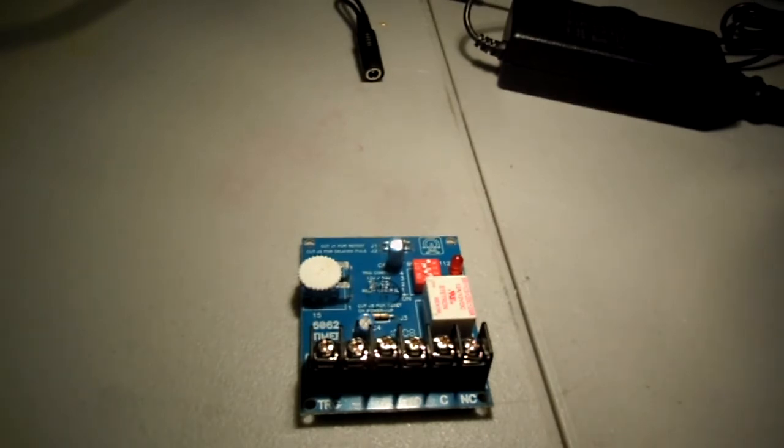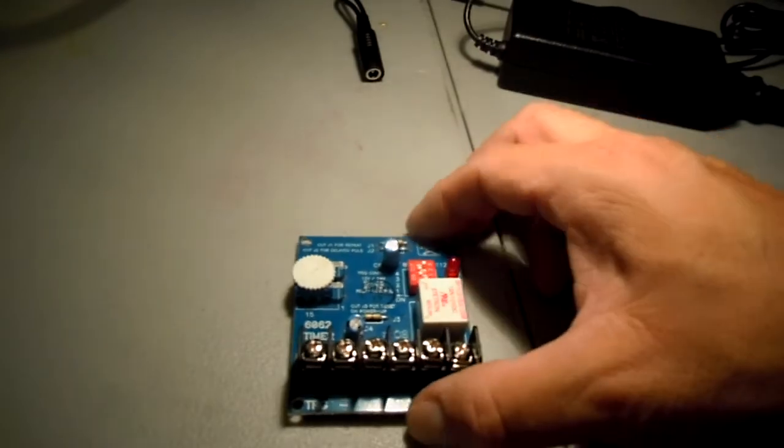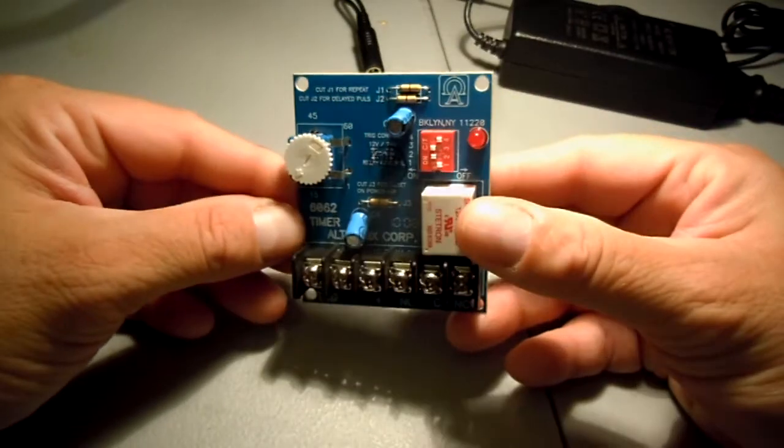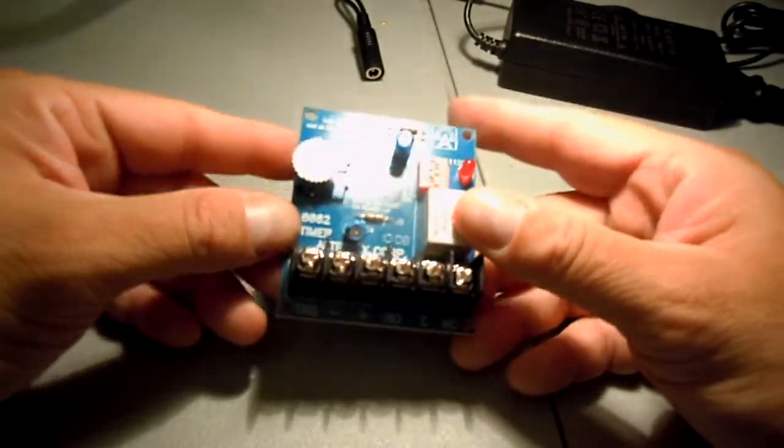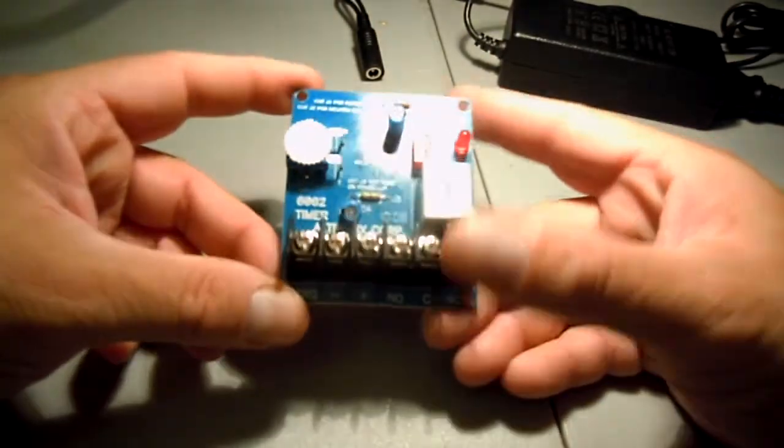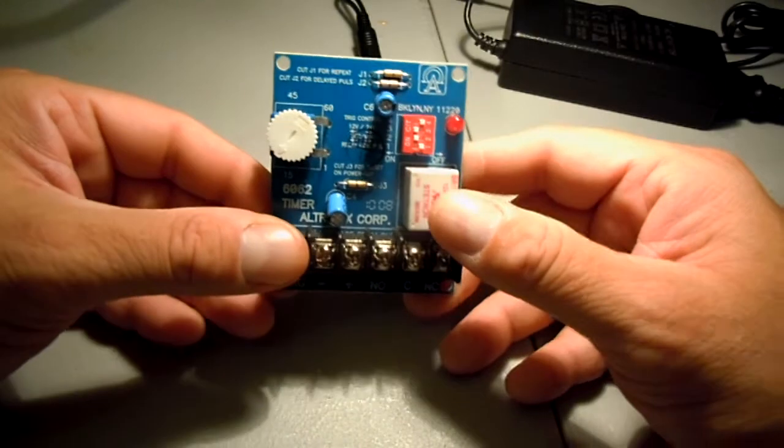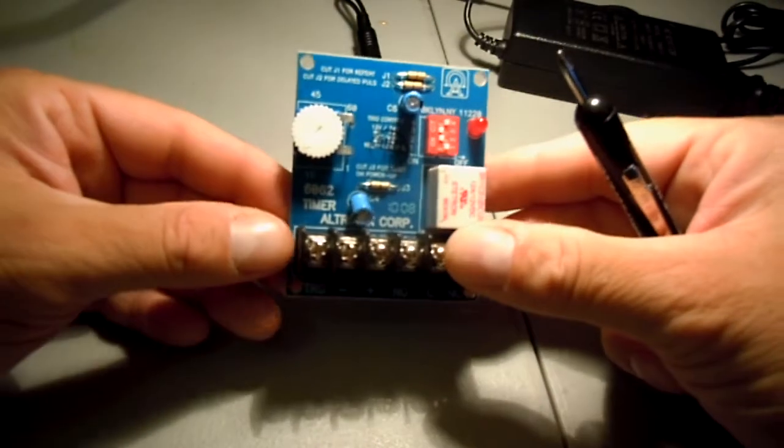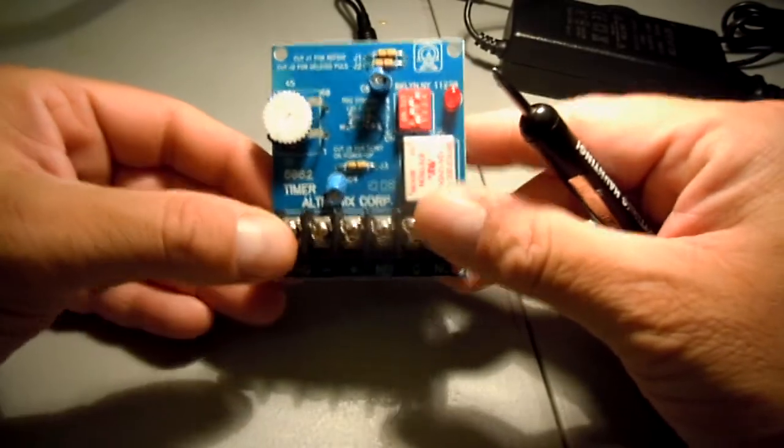For those who don't know where to get these, I purchase mine through Amazon. They're about anywhere between twelve to twenty dollars depending on where it's located and shipping and handling. This is a simple prop controller, also called a 62 timer.